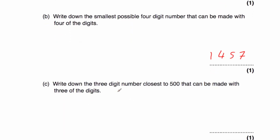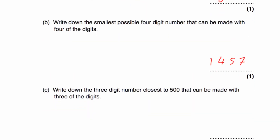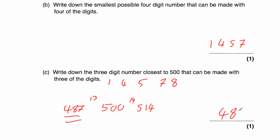Part C says write down the three-digit number that is closest to 500 that can be made with three of the digits. We've got 1, 4, 5, 7, and 8. The closest number we can make smaller than 500 would be 487, and the closest above 500 would be 514. Now 487 is 13 away from 500, and 514 is 14 away from 500. So the answer would be 487.